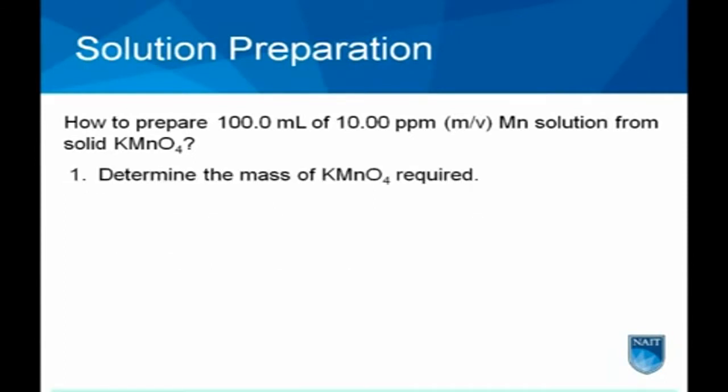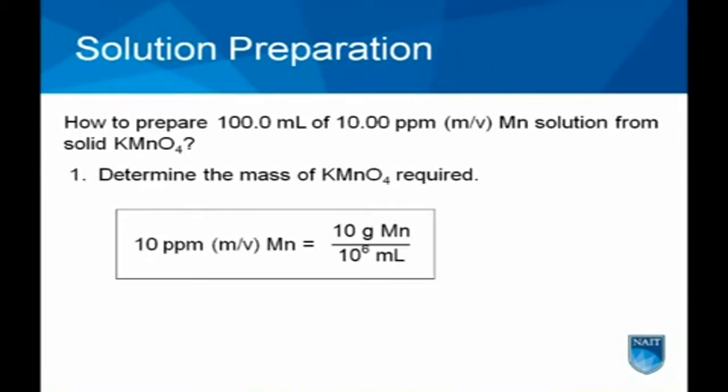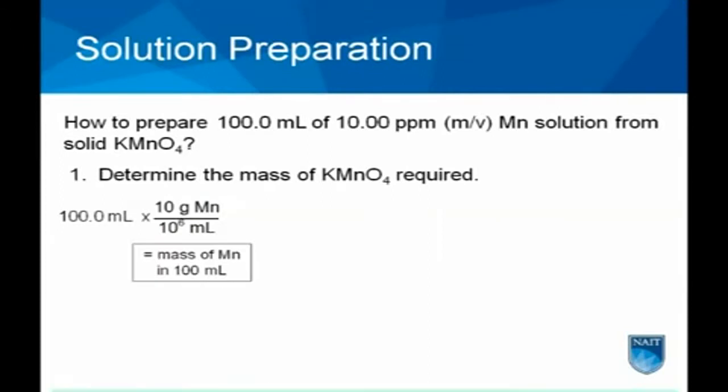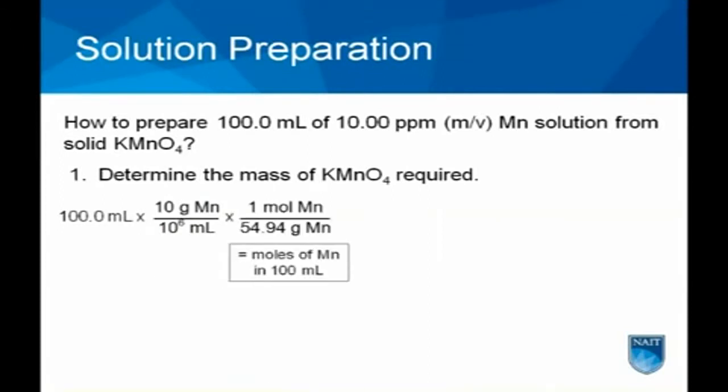To determine the mass of potassium permanganate required in solution, it is necessary to convert parts per million of manganese into equivalent units of mass and volume. The factor unit method is then used to calculate the mass of potassium permanganate required for preparing 100 milliliters of solution.